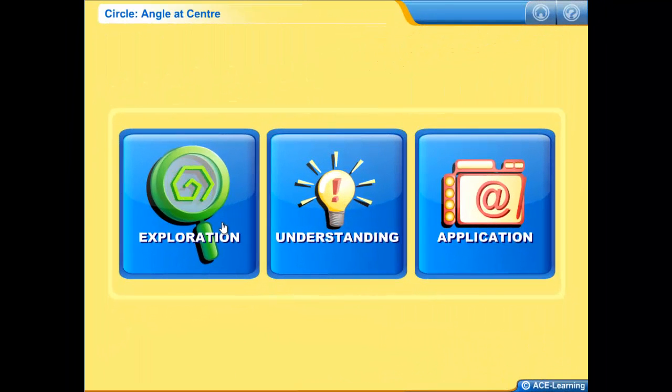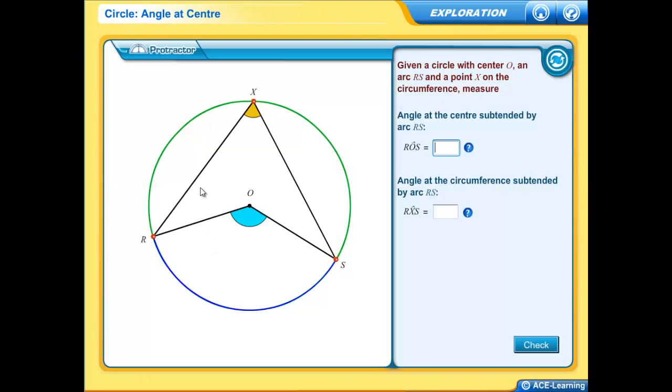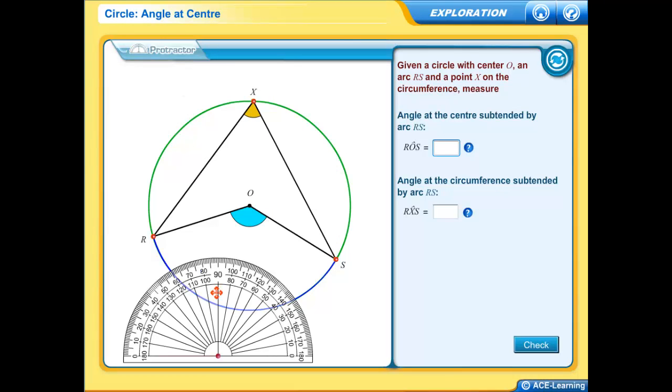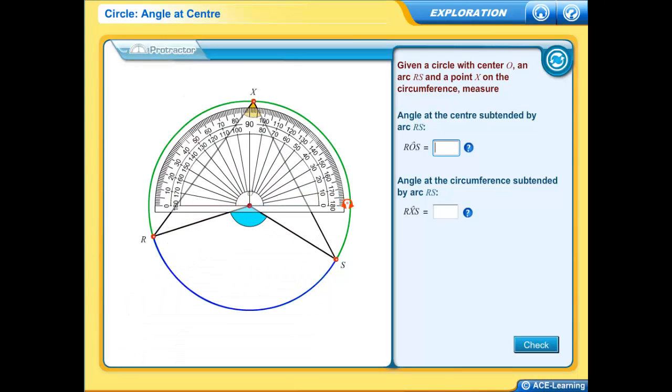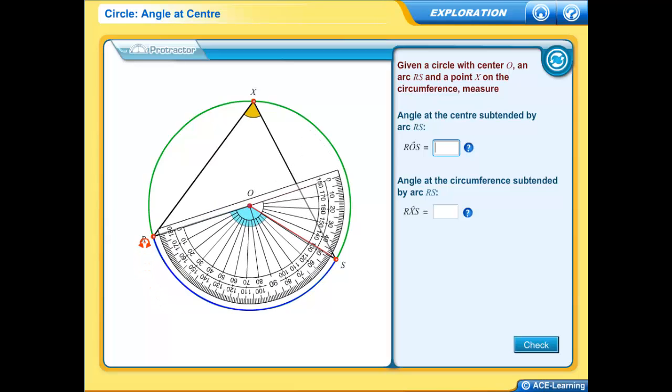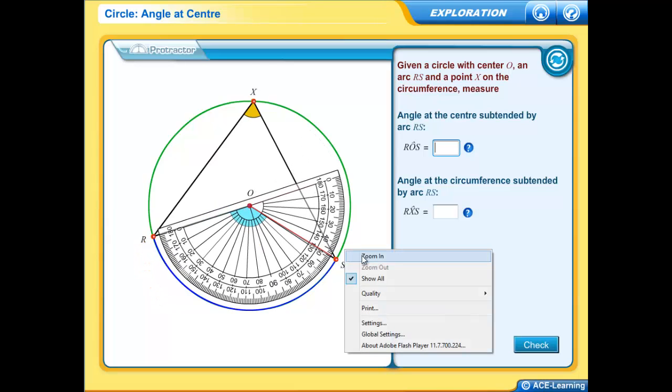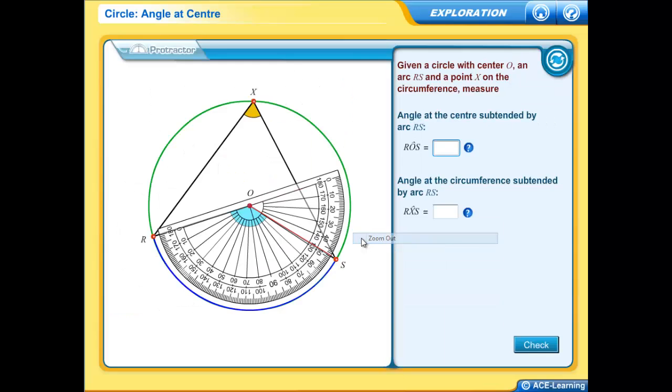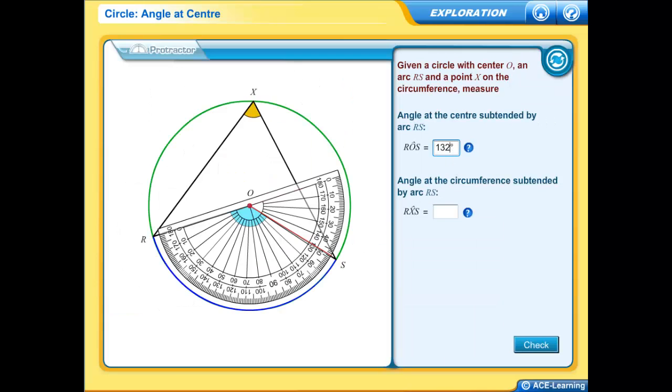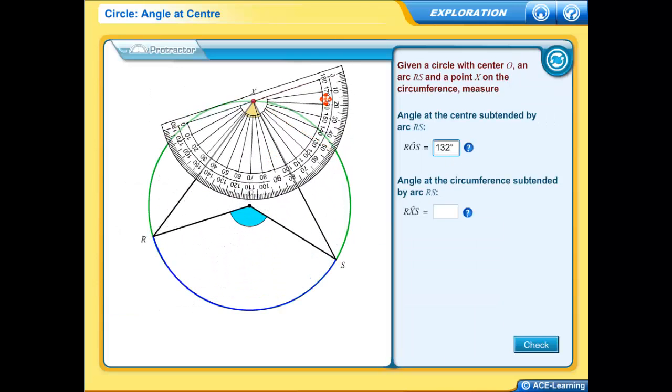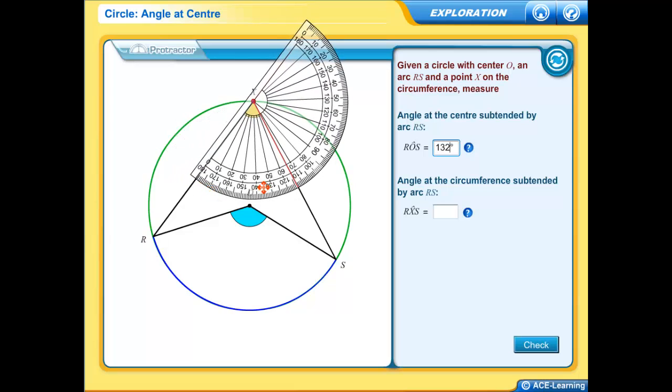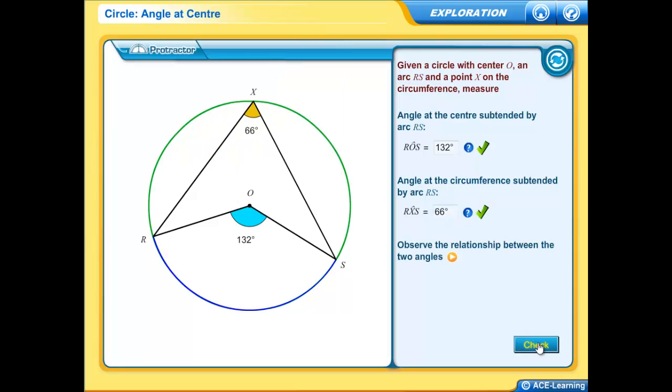Now let's take a look at one of the circle properties, Angle at Center. In the Exploration section, a protractor is provided to help them in the exploration. A Zoom feature is also provided for a magnified view. So students make use of the protractor to find the measurements of the angles, input the answers, and view the animation to observe the relationship.